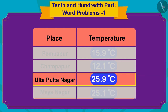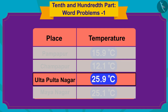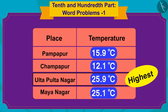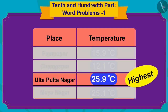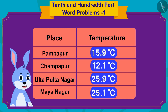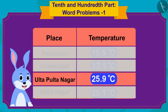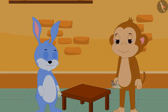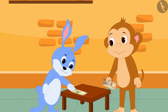...we can say that the temperature of Ulta Pulta Nagar is the highest among all these places. Bunny also found the place with the highest temperature just like us. Bunny and Babban then collected some money together.